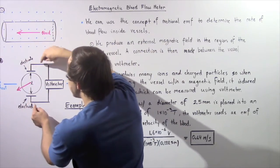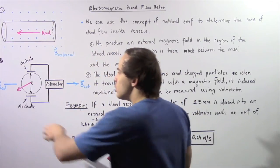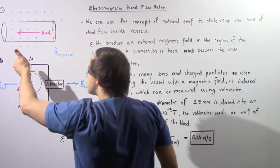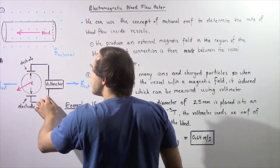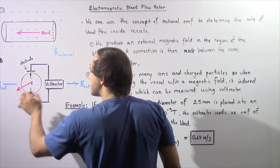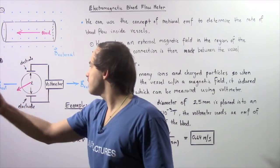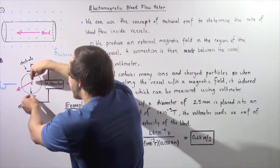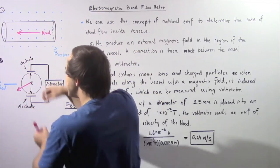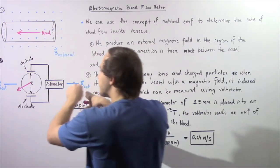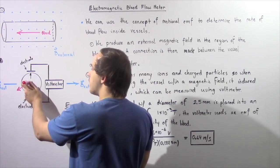We connect these electrodes via a conducting wire to a voltmeter. Notice that we're taking a cross-section area of this diagram, which is what we see in Diagram B. In this case, our magnetic field B points in a general direction and the blood is coming out of the board. The diameter of the blood vessel is given by L, and this diameter L is perpendicular with respect to our magnetic field, which is also perpendicular with respect to our blood flow.